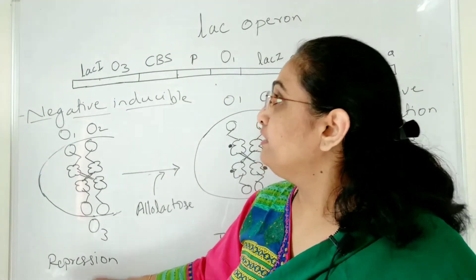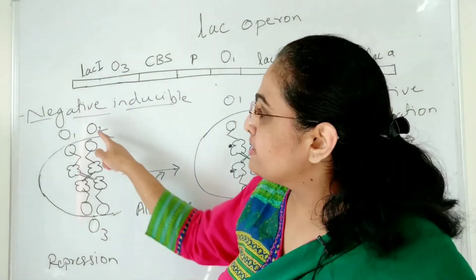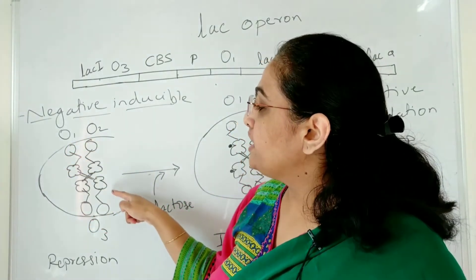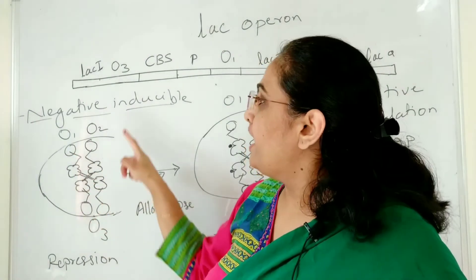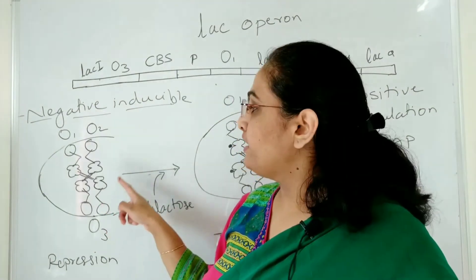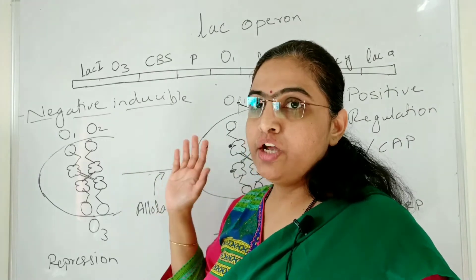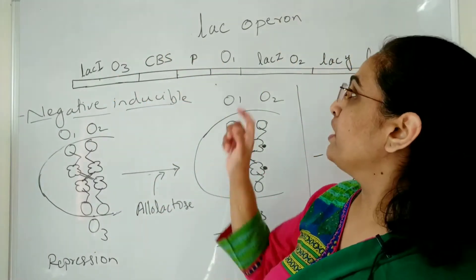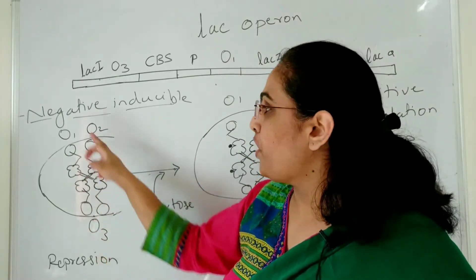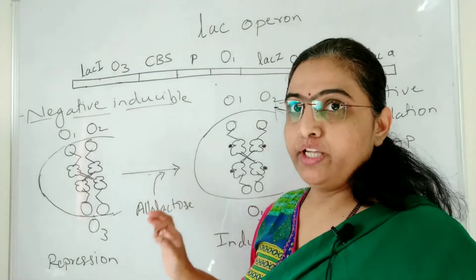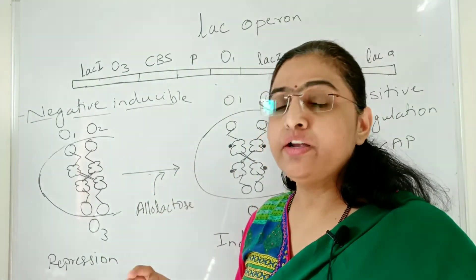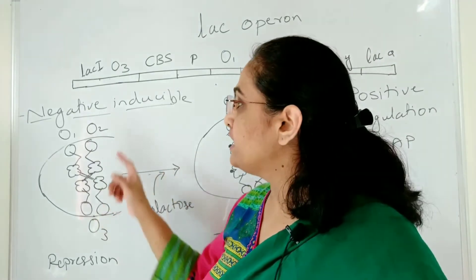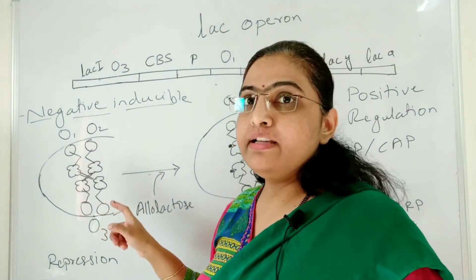In the repression, what is going to happen? The lac I is going to synthesize the repressor. That repressor is going to form a tetrameric form. This diagram shows the lac repressor — it is a tetramer and this functional or active tetrameric repressor is going to bind to all three operators simultaneously, and when it binds to all the operators simultaneously it is going to form a loop structure.